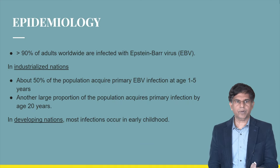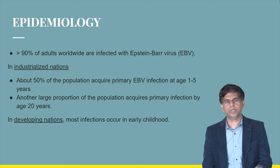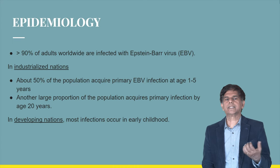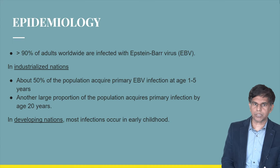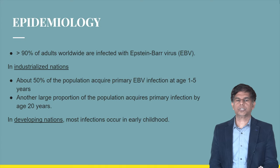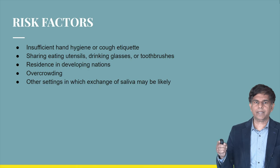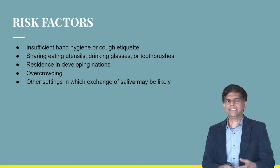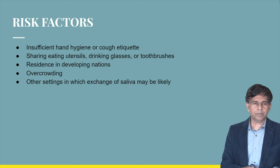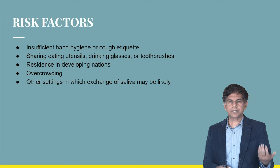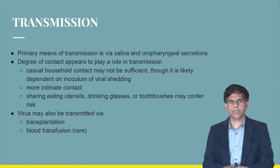Regarding epidemiology, greater than 90% of adults worldwide are infected with EBV. In industrialized nations, about 50% of the population acquires primary EBV infection between ages one and five years, with another large proportion acquiring it by age 20. In developing nations, most infections occur in early childhood. Risk factors include insufficient hand hygiene, coughing, sharing utensils, drinking glasses, or toothbrushes, overcrowding, and exchange of saliva through kissing.